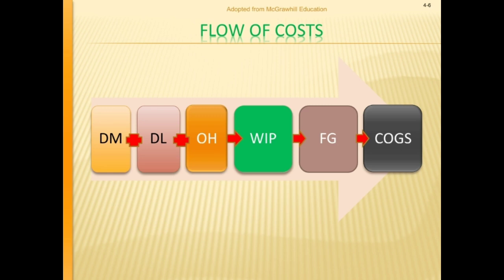As usual, we have direct material, direct labor, and overhead. Upon processing, these resources or assets will be transferred or reclassified into the work in process account. When they are completed, they will again be reclassified into the finished goods account. And of course, when you sell them, they are transferred to cost of goods sold. That's how simple the flow of cost is.